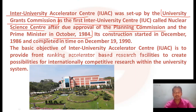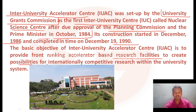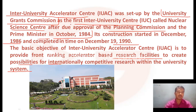Its construction started in 1986 and was completed in 1990. The basic objective of Inter-University Accelerator Center (IUC) is to provide ranking accelerator-based research facilities to create possibilities for internationally competitive research within the university system. It is the first Inter-University Center, also known as the Nuclear Science Center, approved by the Planning Commission and Prime Minister in 1984.